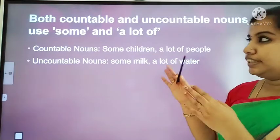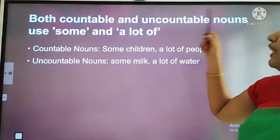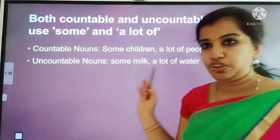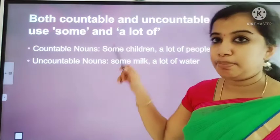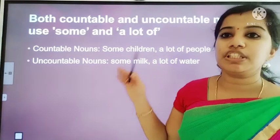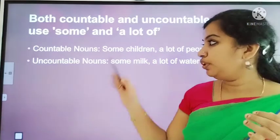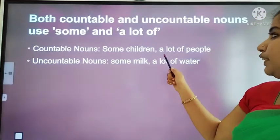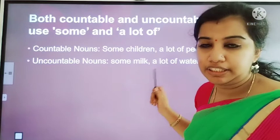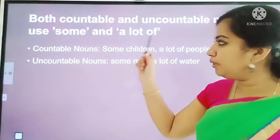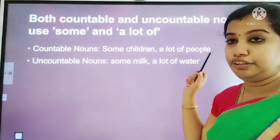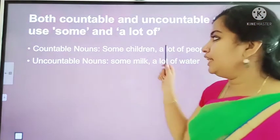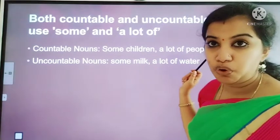Now here is another rule. Both countable and uncountable nouns use 'some' and 'a lot of.' For countable nouns: some children, a lot of people. For uncountable nouns: some milk, a lot of water. We use 'some' and 'a lot of' with both countable and uncountable nouns.